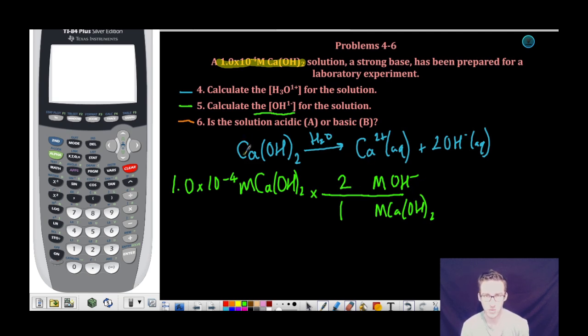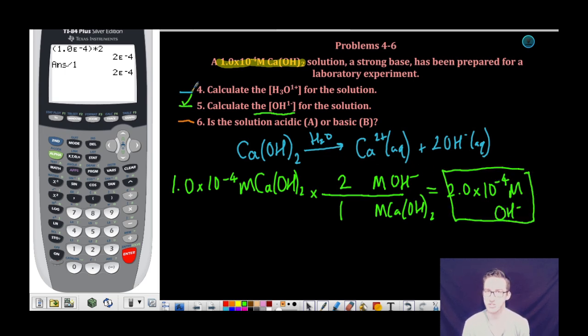Because for every 1 mole of calcium hydroxide, I will make 2 moles of hydroxide ions. In other words, the concentration of the hydroxide ion is going to be double the concentration of the original calcium hydroxide. So this problem is essentially asking you to think about the relationship that exists between the original base formula unit and hydroxide. In this case, it's 1 to 2.